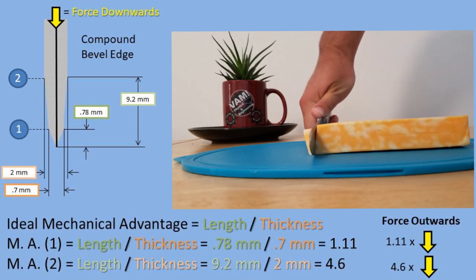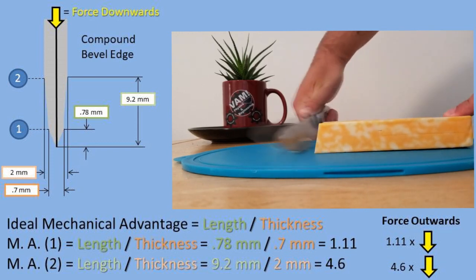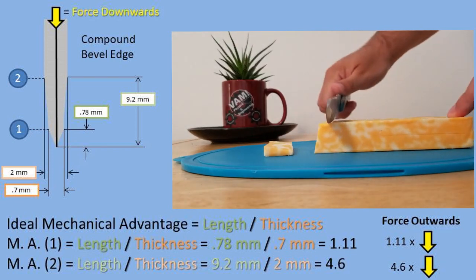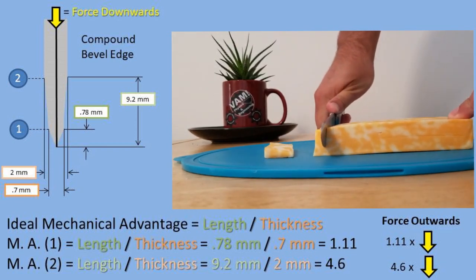Doing the same thing for point 2, the mechanical advantage is 4.6. This means that the force downwards is multiplied times 4.6 to get the force acting outwards.